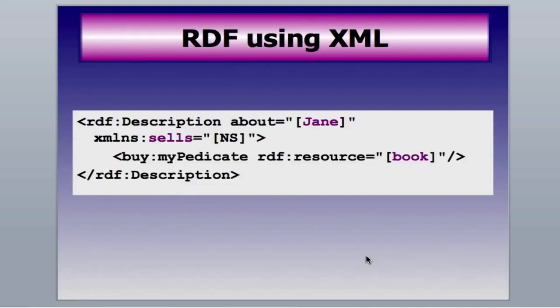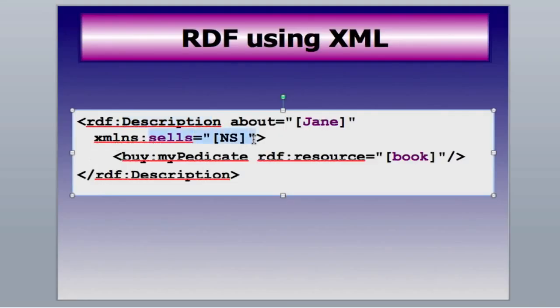Here's how it looks to a computer. We basically use a specific XML structure — the RDF namespace. You can see that the description tag is the root, set about Jane. We set up a namespace for 'sells' and a resource for 'book.' Now we've codified it into machine language so a computer can analyze this triplet and use it to compare and show relationships with other triplets.